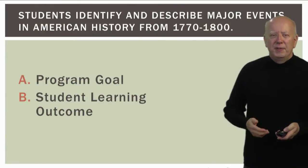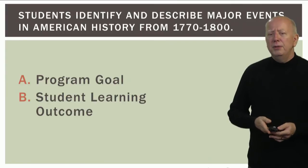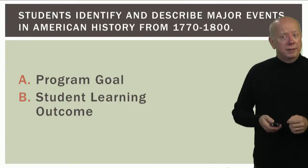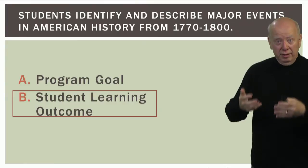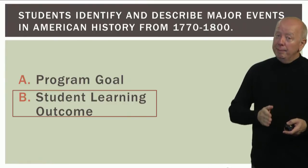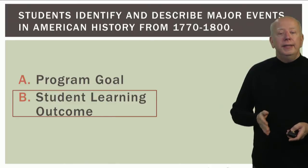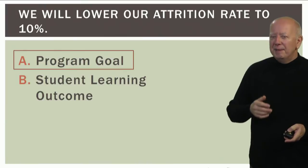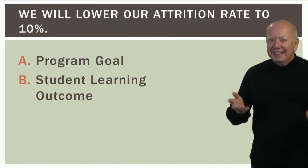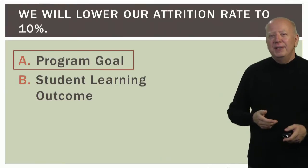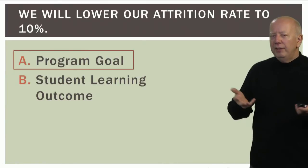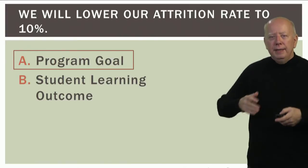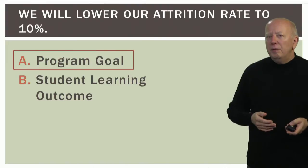Let's do a couple of exercises. Is this a program goal or a student learning outcome? 'Students identify and describe major events in American history from 1770 to 1800.' This is a student learning outcome because students are demonstrating something they know, and it's written in a measurable way. Here is an example of a program goal: 'We will lower our attrition rate by 10%,' because this doesn't have to do with student learning — it has to do with programmatic elements.